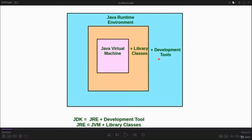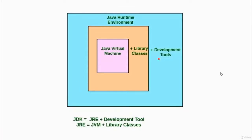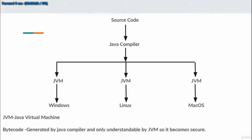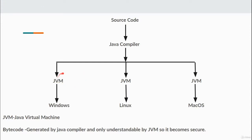In this lecture we are going to study about what is JVM, what is JRE, and what is JDK, and how they are used in Java. Before diving into the topic, I want to cover something left from previous lectures. Here is the chart — you can see the JVM, the Java compiler, and source code. The JVM is platform dependent, meaning it requires a specific platform. For Windows, the JVM is different.